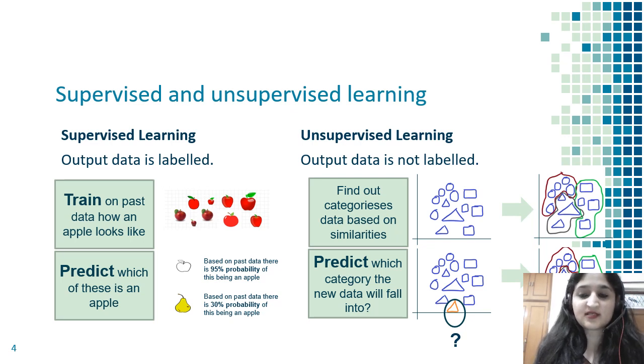I will train the machine - this is how an apple looks like. I'll give it photos of different apples. Then I'll give two new fruits and ask the machine to predict whether the new fruit is an apple or not. I show the machine the first fruit - it says there's 95 percent probability this fruit is an apple.